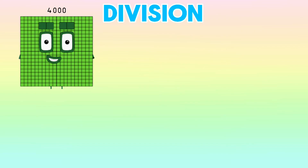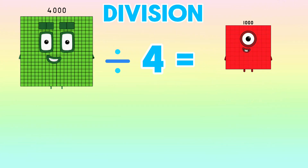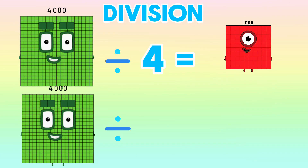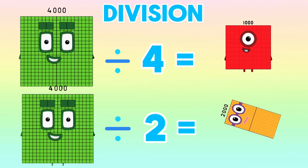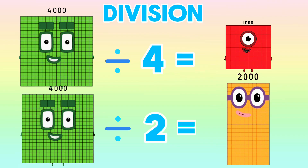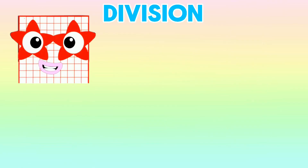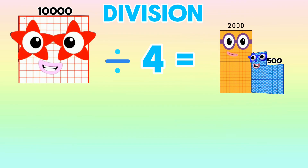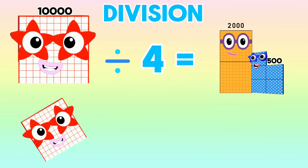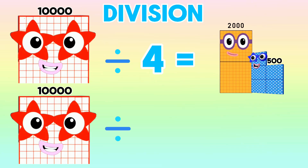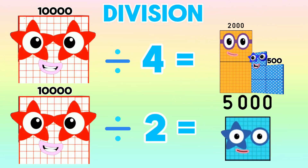Next, 4,000 divided by 4 is equals to 1,000. 4,000 divided by 2 is equals to 2,000. 10,000 divided by 4 is equals to 2,500. 10,000 divided by 2 is equals to 5,000.